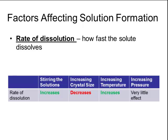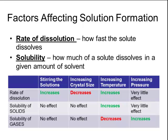Increasing the temperature of the solvent also causes the rate of dissolution to increase. This is also related to the number of collisions occurring in a certain amount of time. Higher temperatures have particles that are moving around faster. If the particles are moving around faster, they're going to be colliding more often, and the more frequently they collide, the faster the rate of dissolution. Increasing the pressure, however, has very little effect on how fast the solute dissolves.